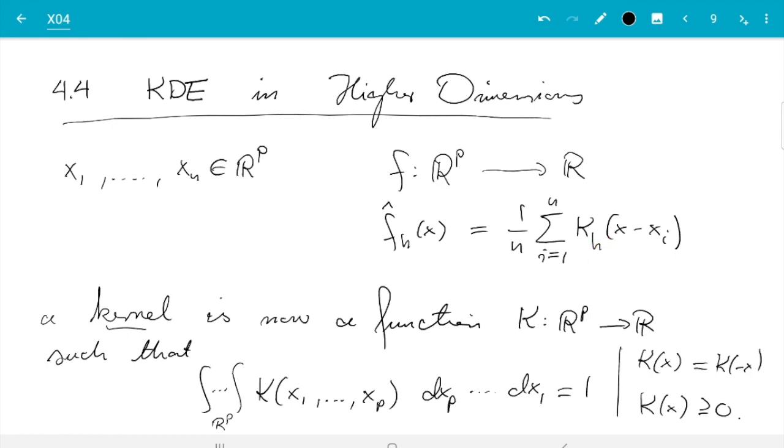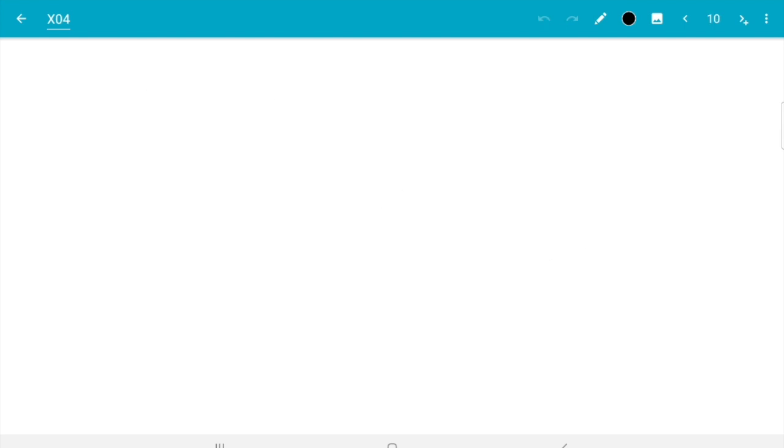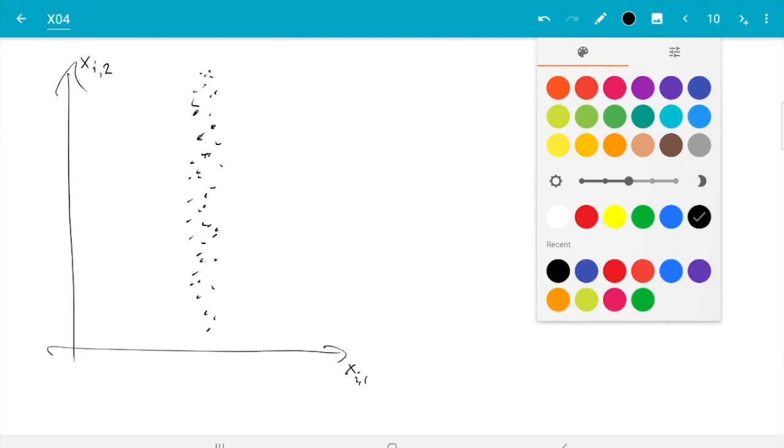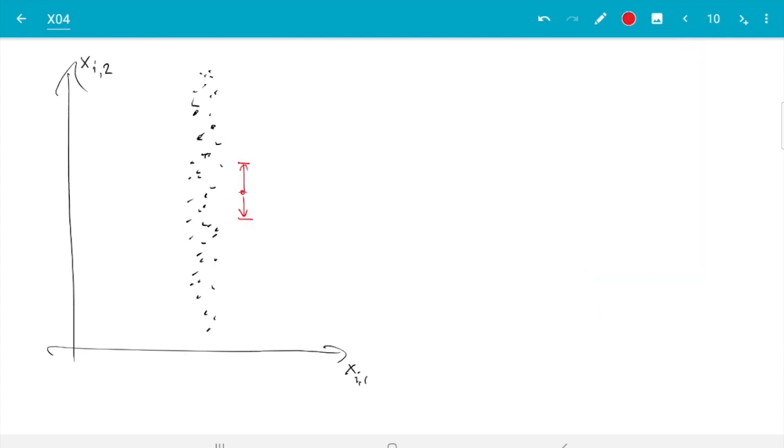So that seems straightforward, and the complications come in when we think of what could the bandwidth mean. So let me do a sketch. Let's think p equals 2. Here are the x_i1 and here are the x_i2, and our points are now just vectors in the plane. Now with this picture I already suggest an idea - namely, it's not clear the bandwidth should be the same for both coordinates.